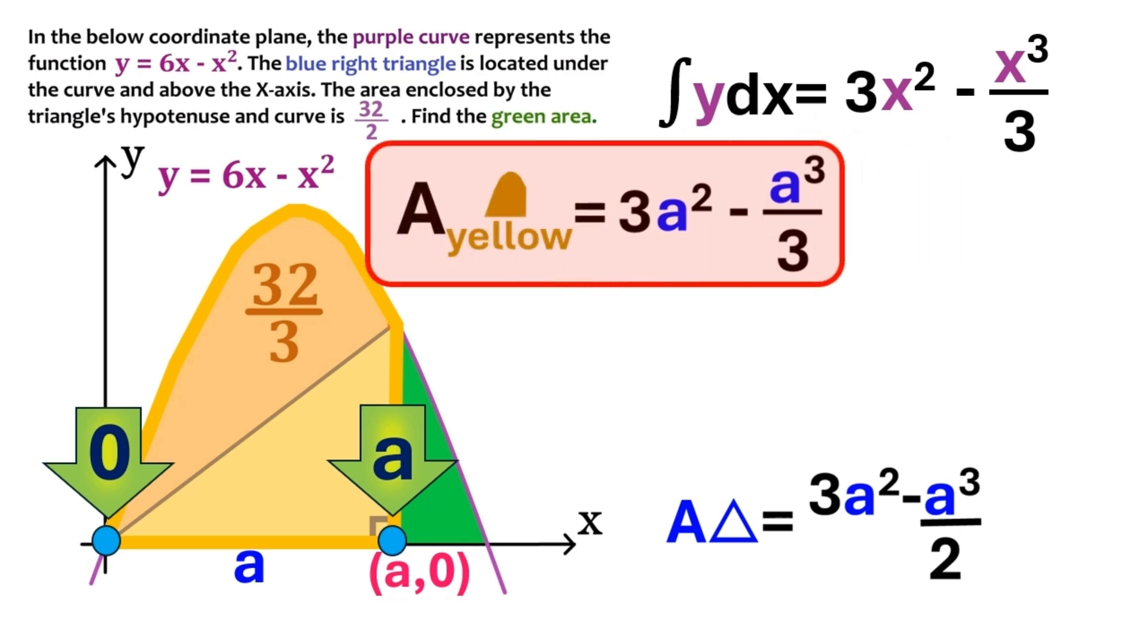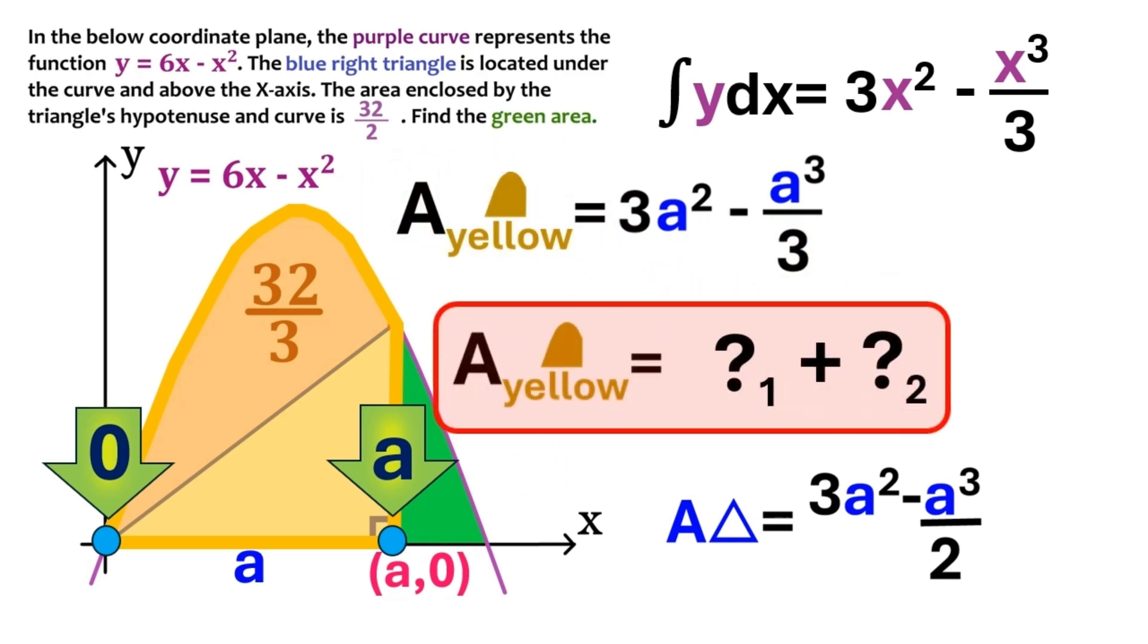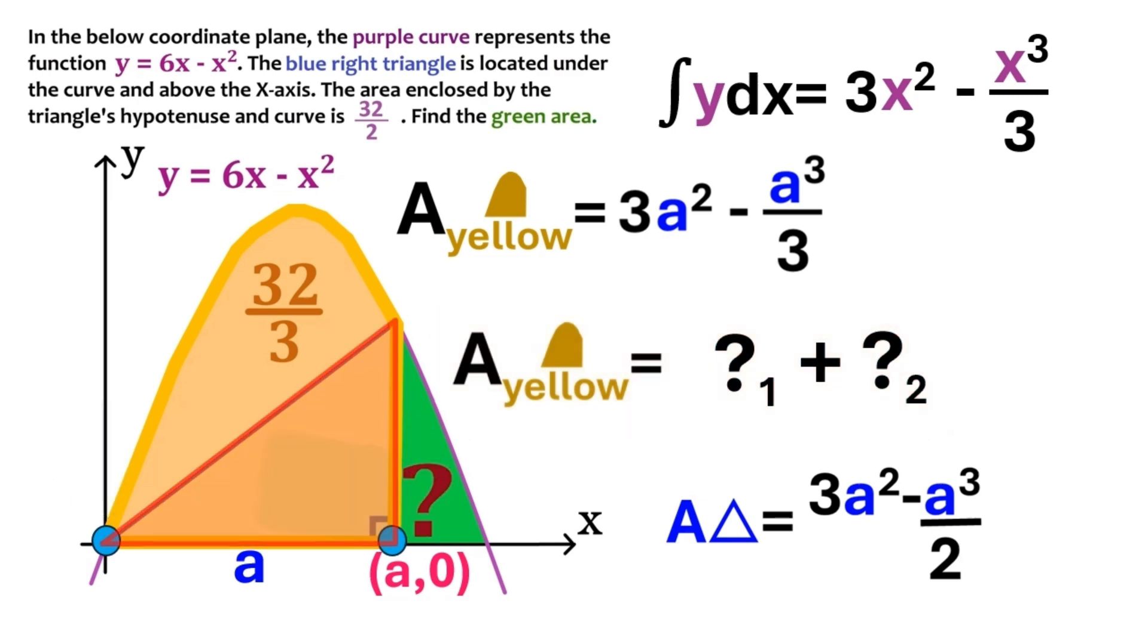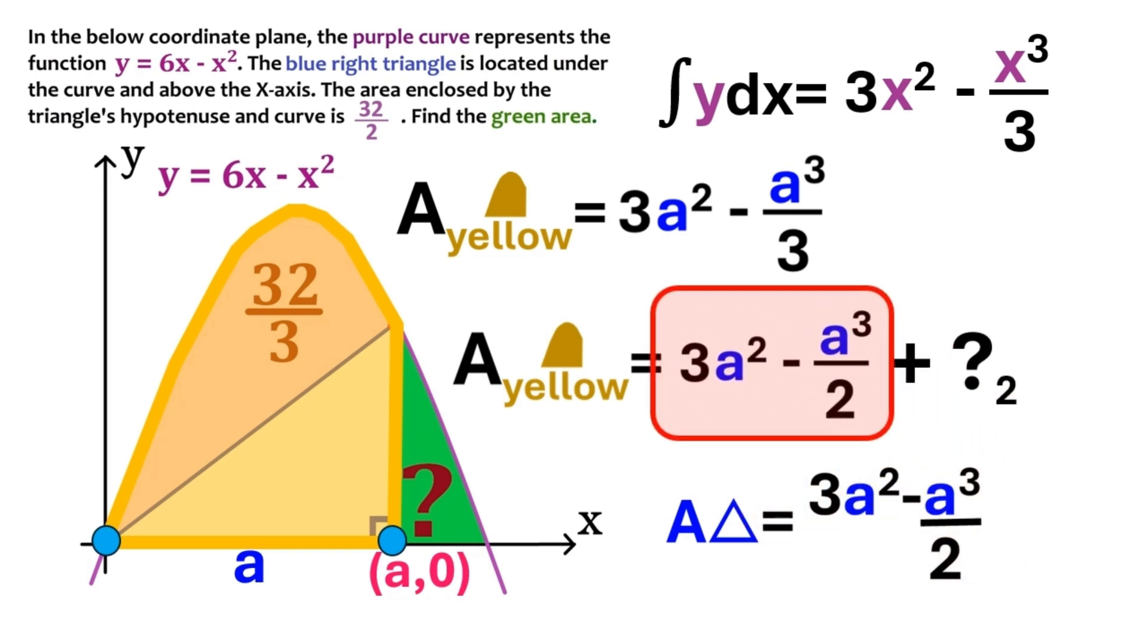Which is great. Because we now have an equation for the area of the yellow region. And the yellow region actually consists of two components. The first component is this right triangle. And we know its area is this. So let's move this over here.